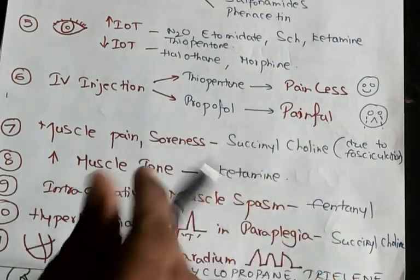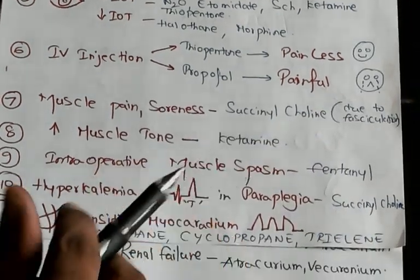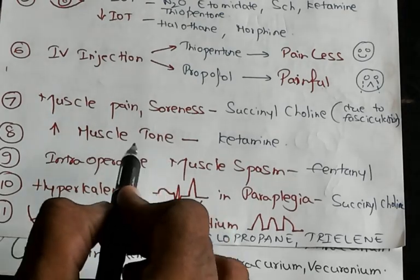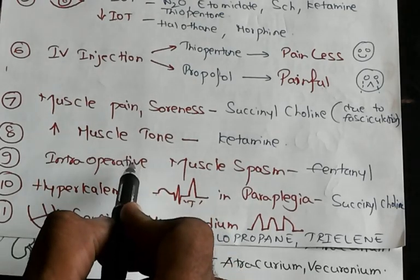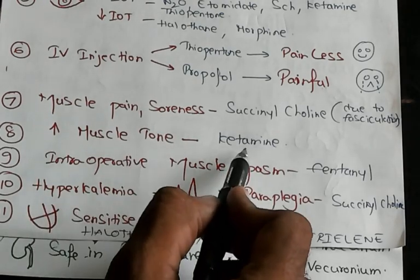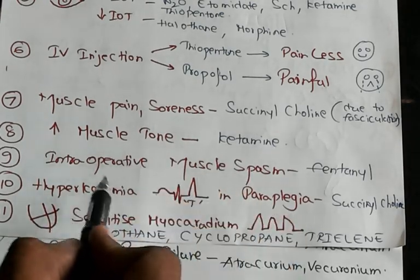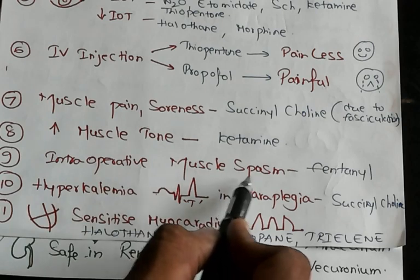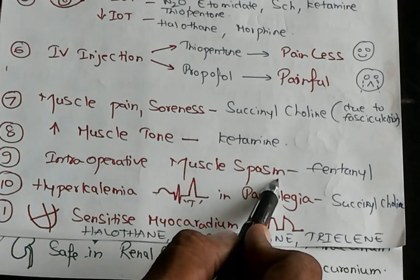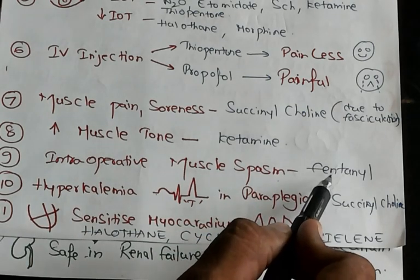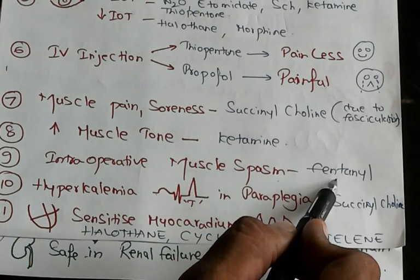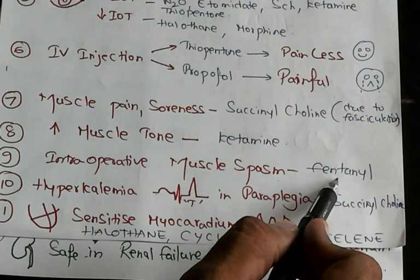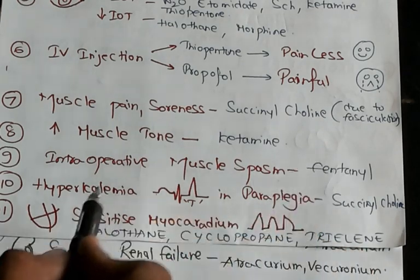Increased muscle tone is the feature of ketamine. Intraoperative muscle spasm, chest wall rigidity, and muscle spasm are the adverse effects of fentanyl — that is what you should remember.